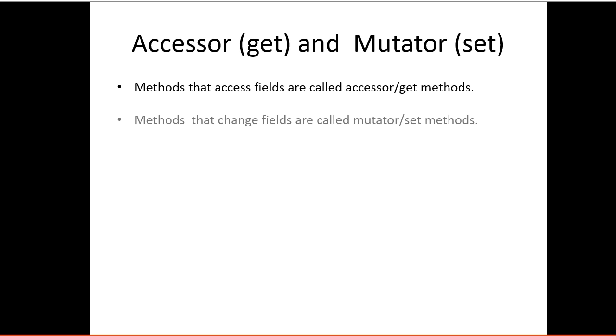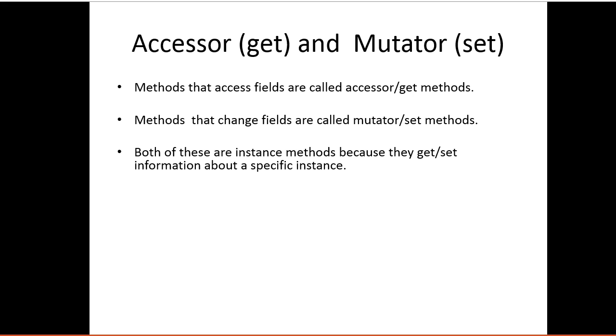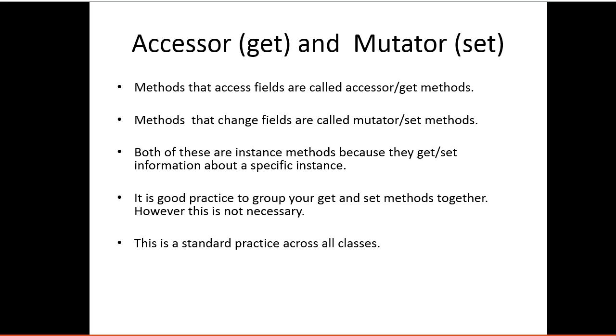So we have two types of instance methods that we typically set up. They are called accessors or get methods and mutators, set methods. Both of these are instance methods because they can get and set information about a specific instance. It's good practice to group your get and set methods together. However, it's not necessary. And finally, this is a standard practice across all classes.